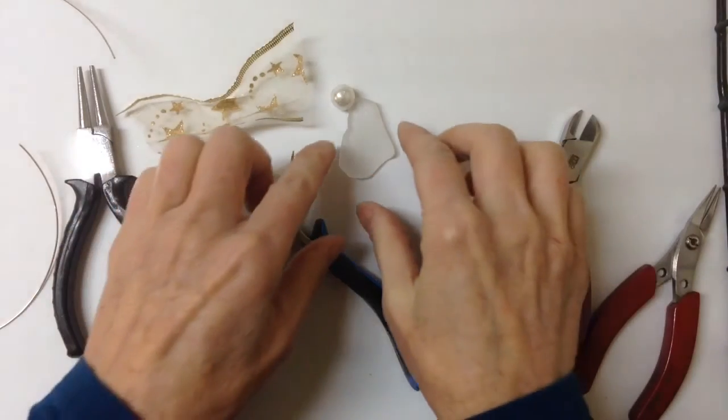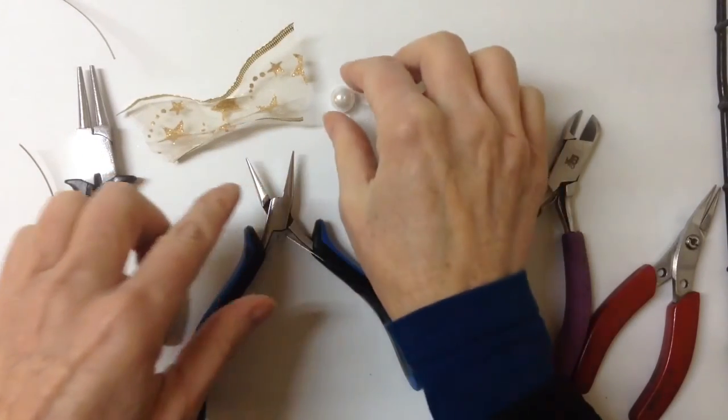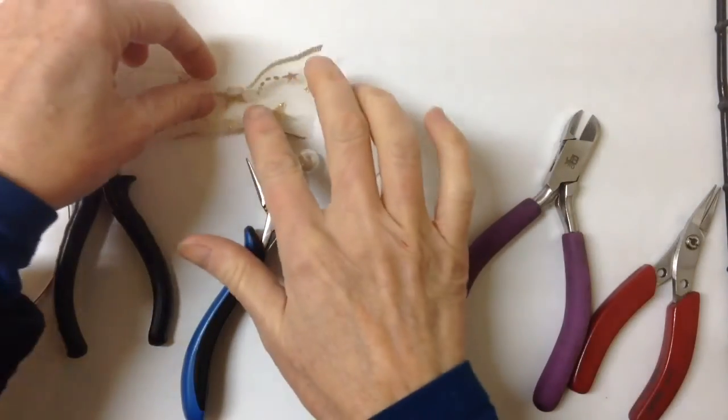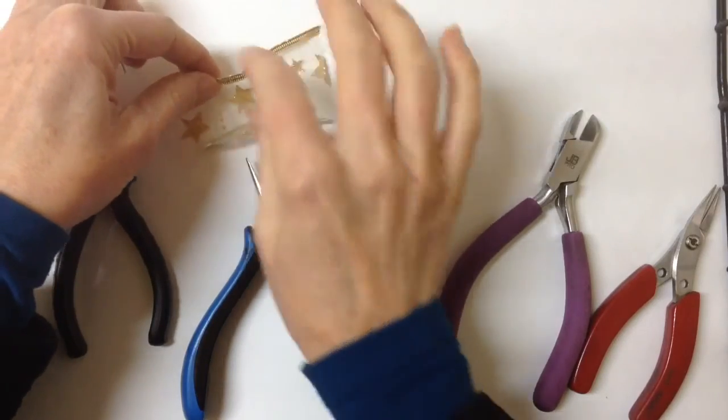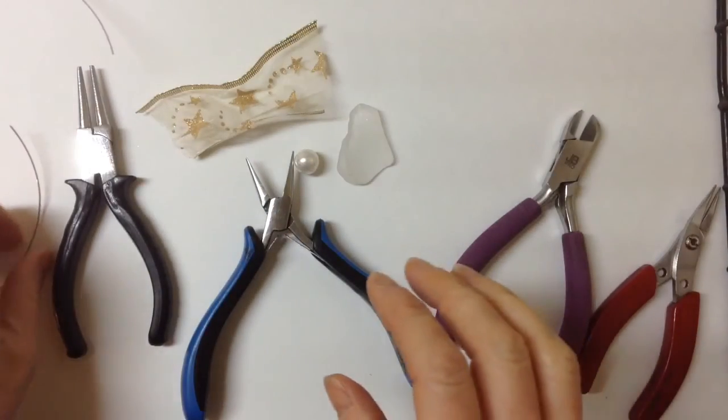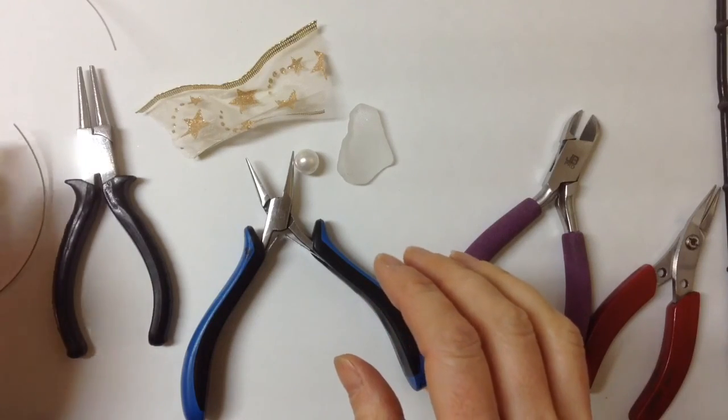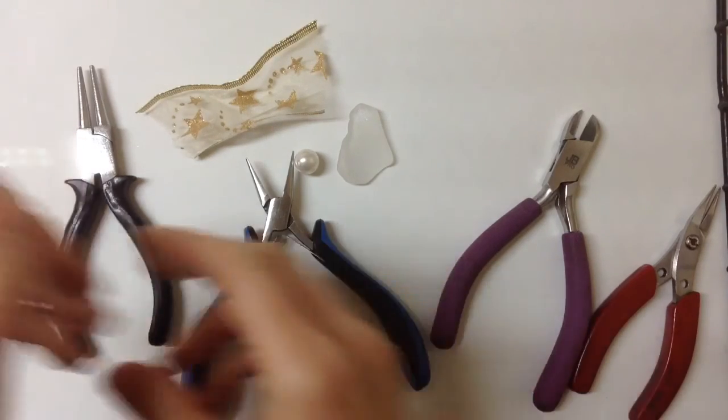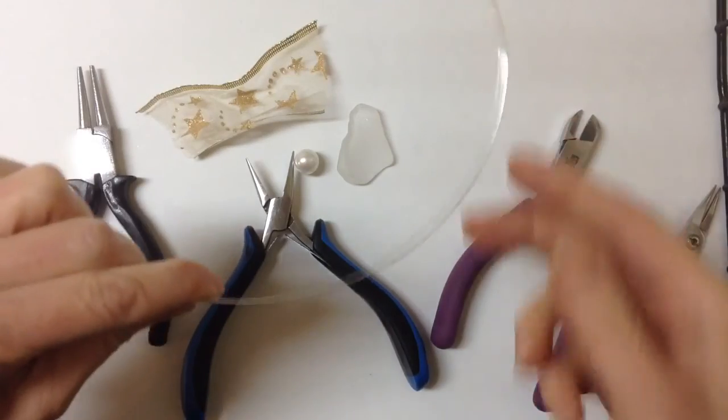To make the angel ornament, you're going to need a piece of sea glass, a 10 millimeter bead, some ribbon that has the wire in it, and your tools. I cut a piece of 20 gauge wire, it's about 18 inches long.